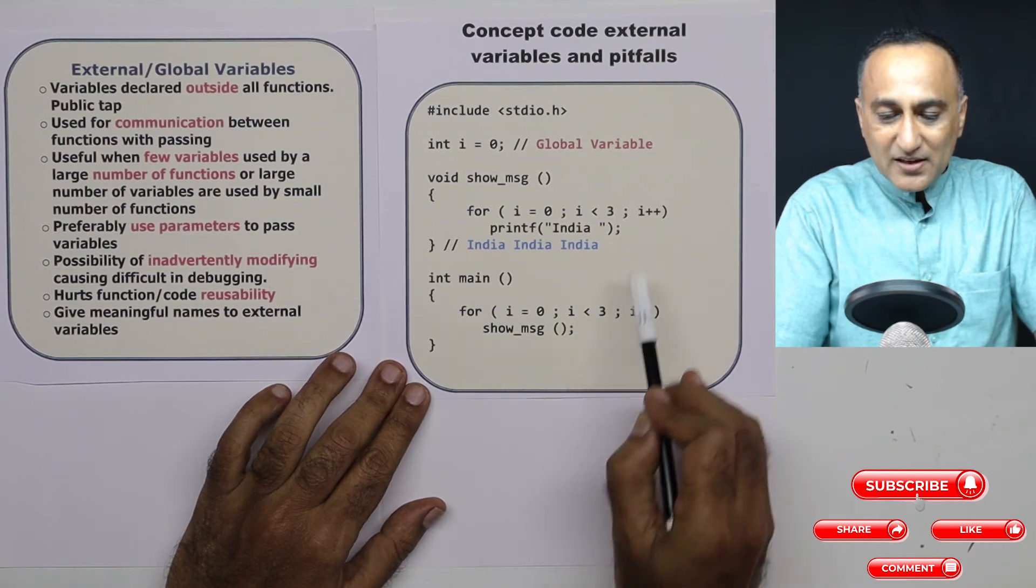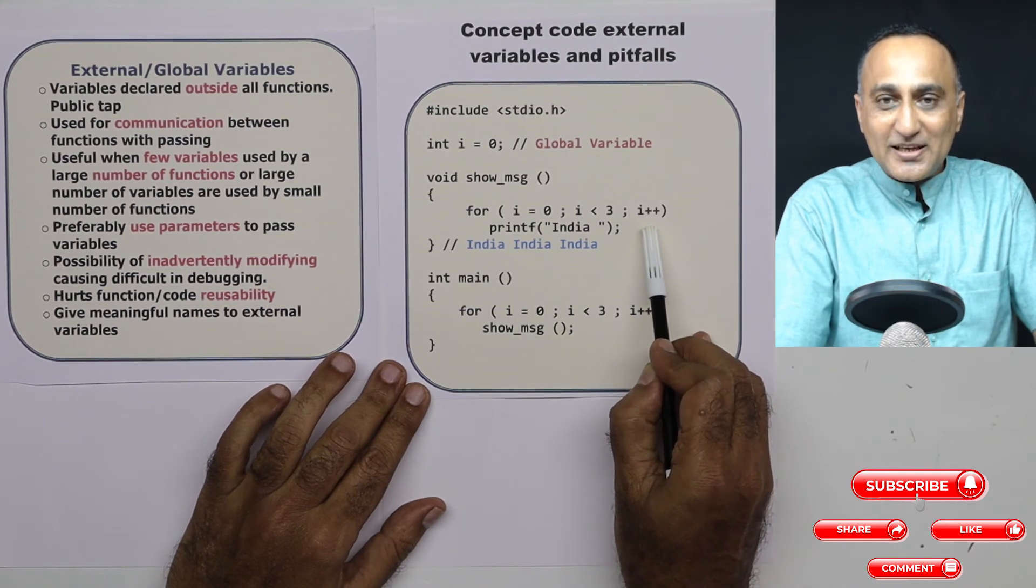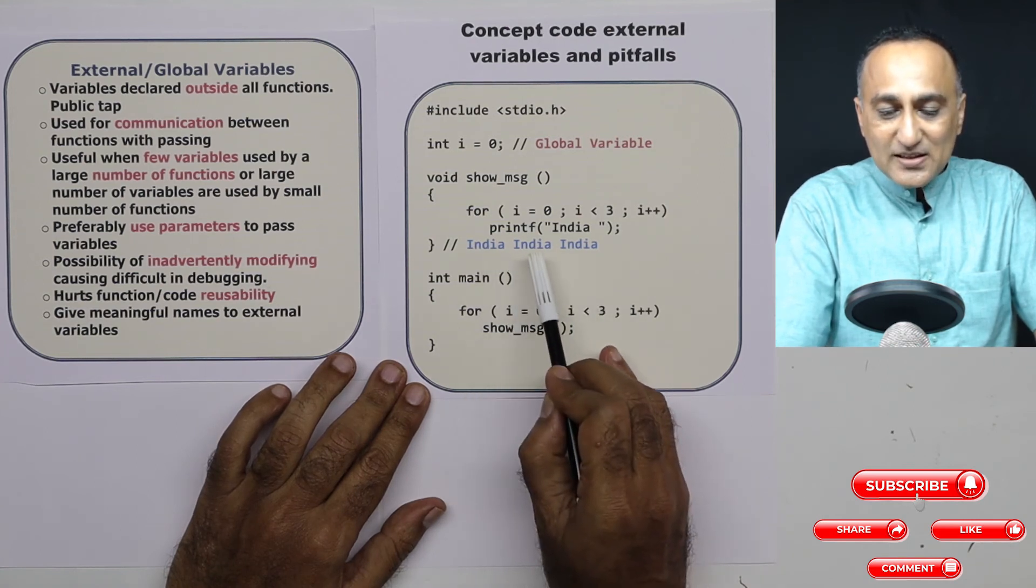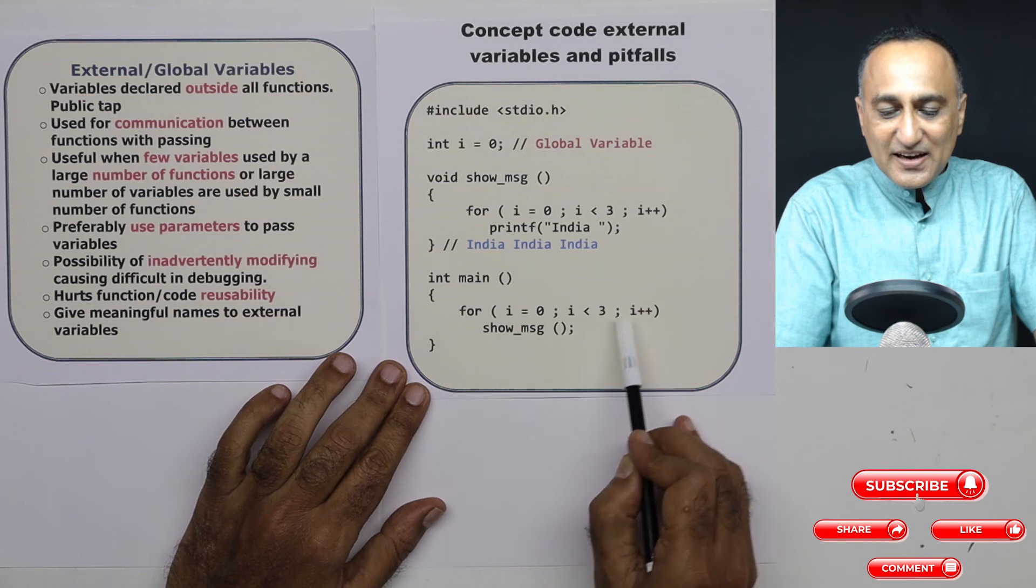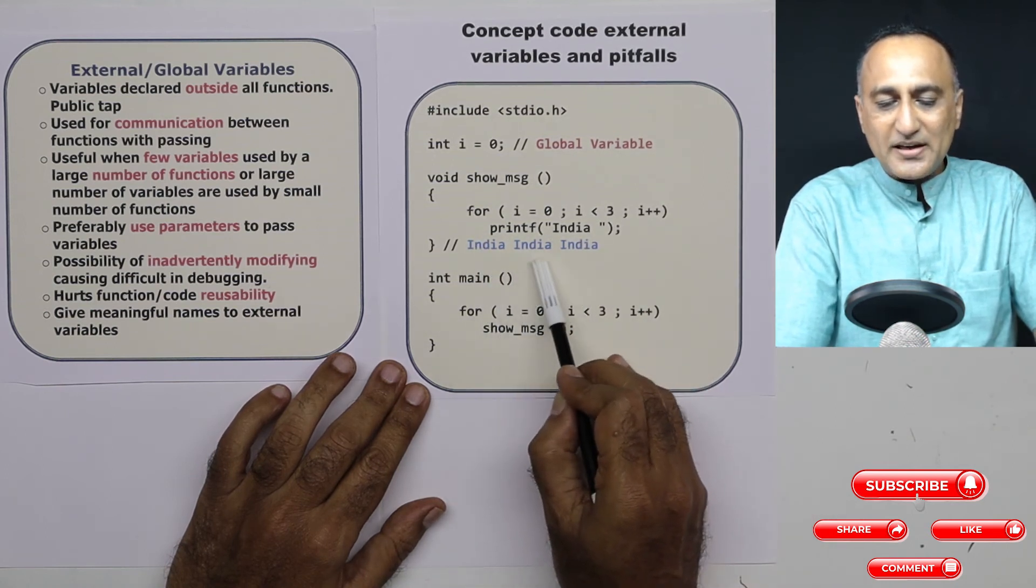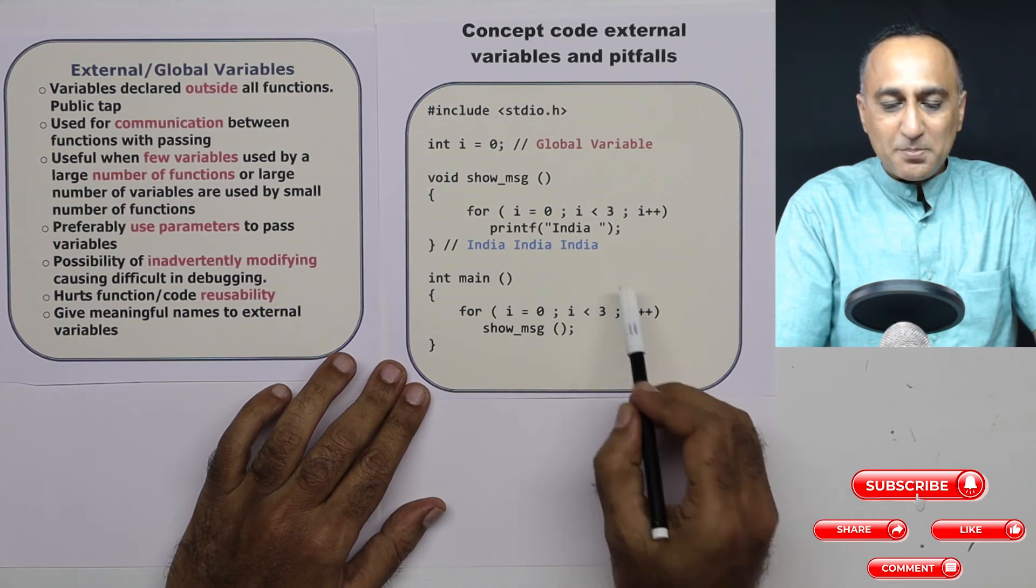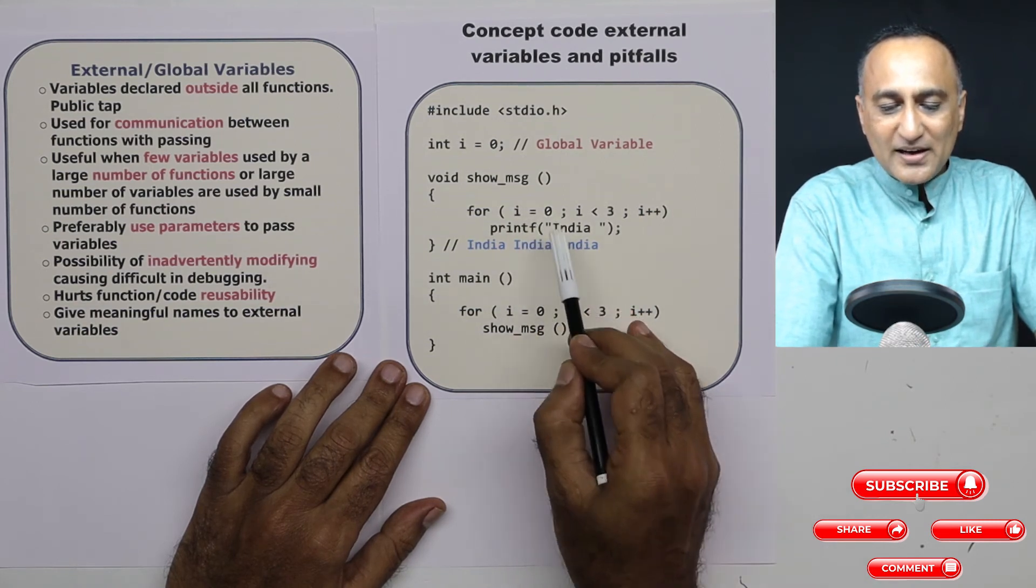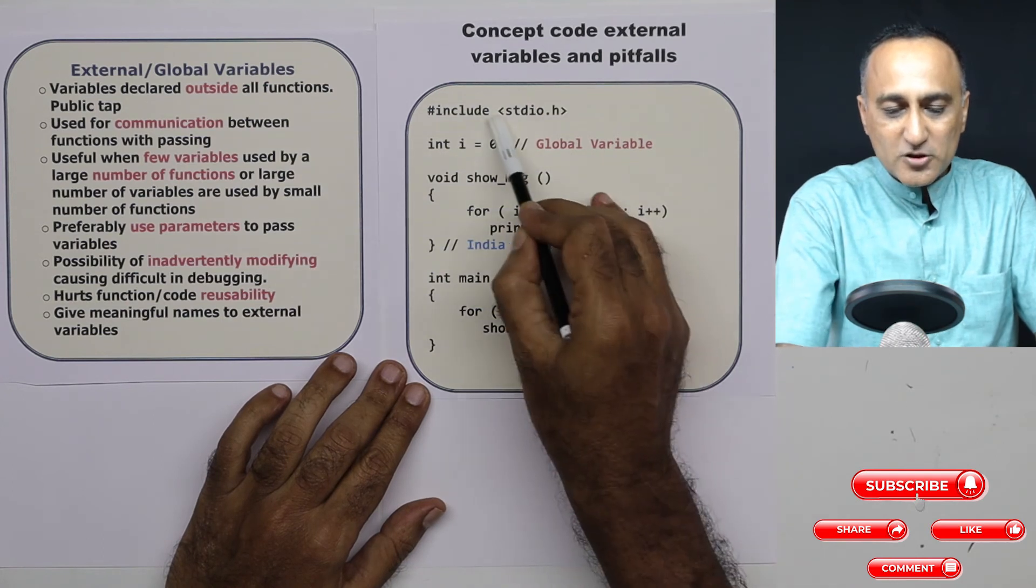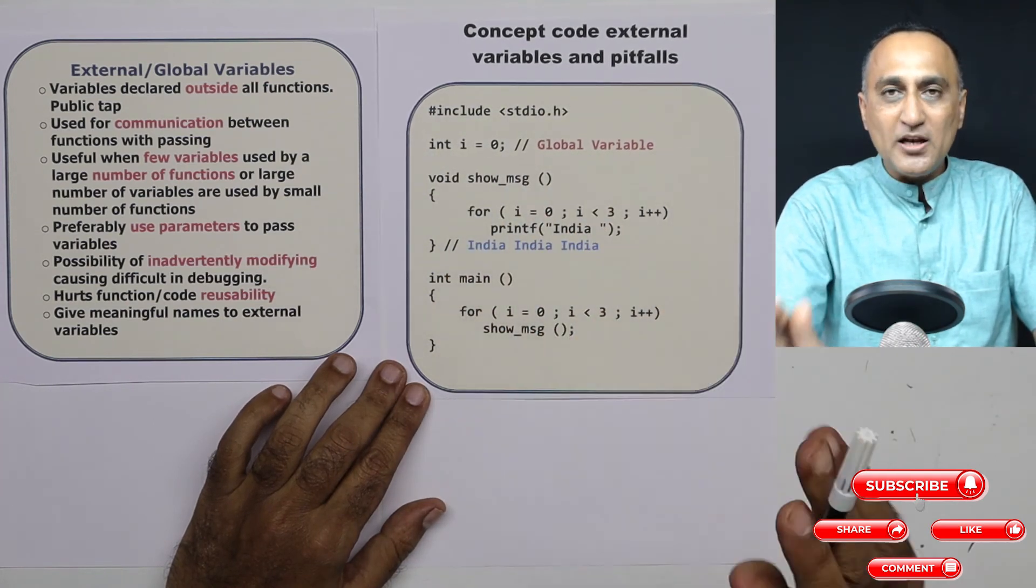Now when I come back here, i has already become 3. So 3 is less than 3 becomes false. So rather than it printing India nine times based on this logic, it is only going to print India three times because you change the value of i, it not only got affected here, it also got affected here because the i happened to be a global variable.